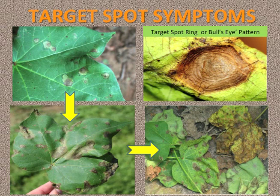As the spots enlarge to half an inch in diameter, a distinct zone or target spot pattern of alternating light and dark brown bands is seen. With drier weather in September, the halo surrounding each leaf spot often turns dark brown to purple in color.